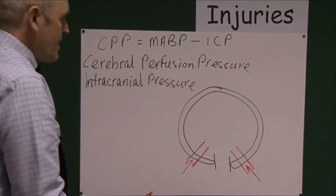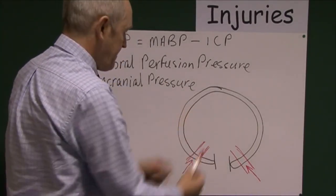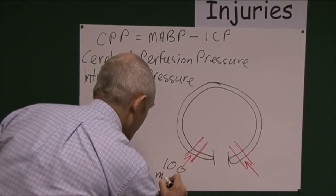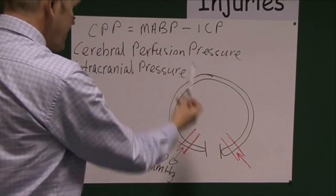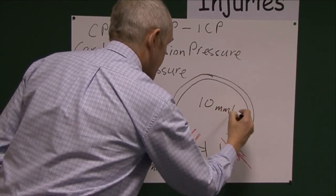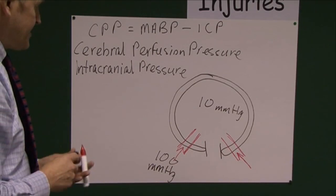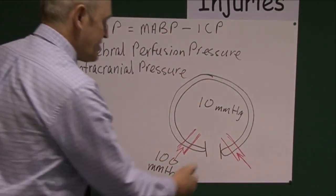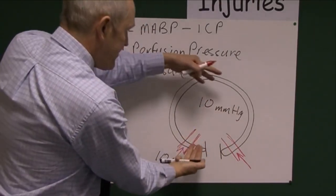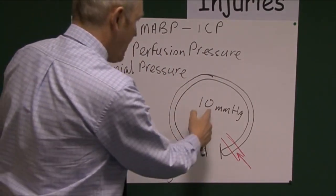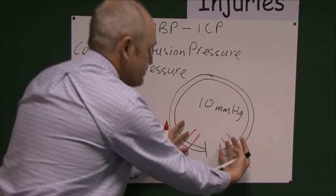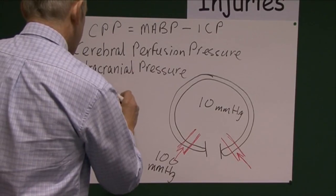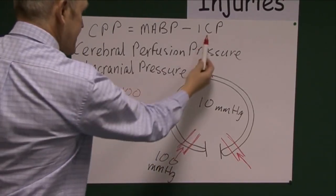The mean arterial blood pressure forces blood into the cranial cavity, perfusing the mass of blood vessels throughout the brain. But remember, there is already an intracranial pressure inside the brain. If the mean arterial blood pressure is around 100 mmHg forcing blood in, then the intracranial pressure is about 10 mmHg inside the cranial cavity — so you have 100 mmHg forcing in, but 10 tending to force it out.